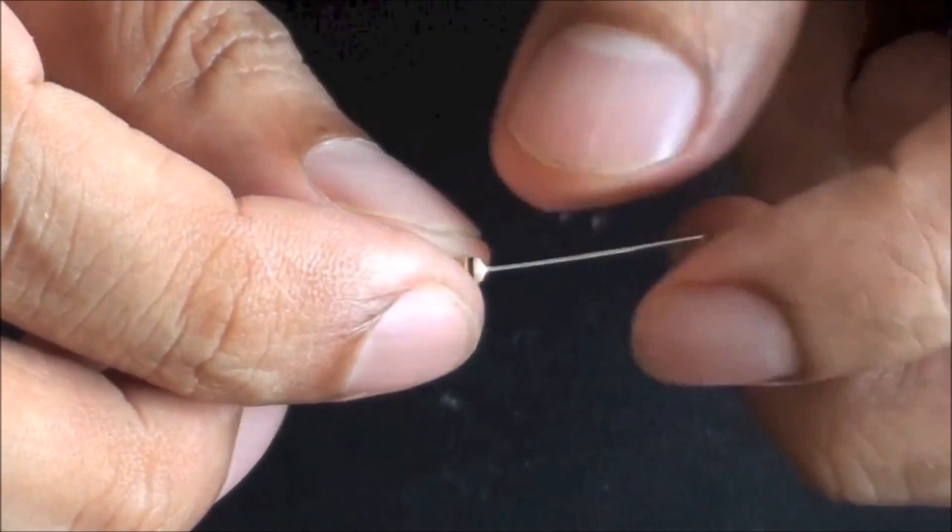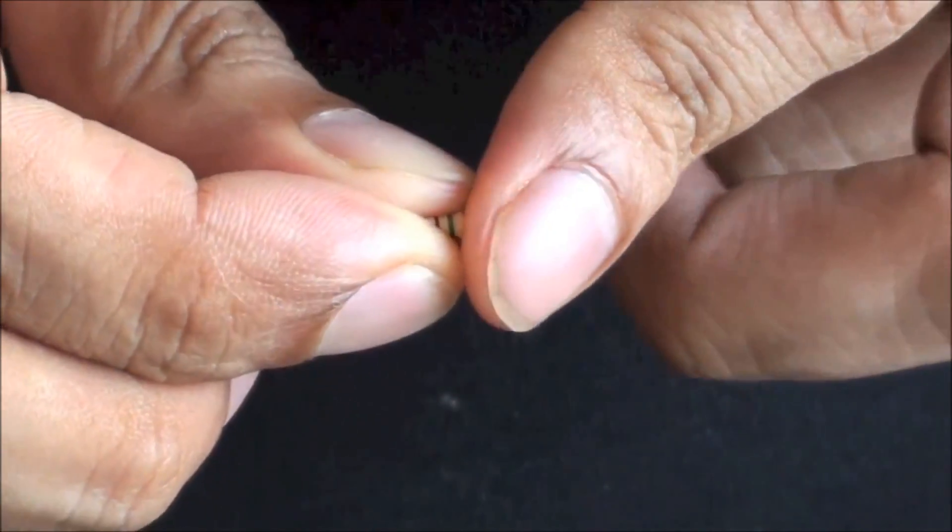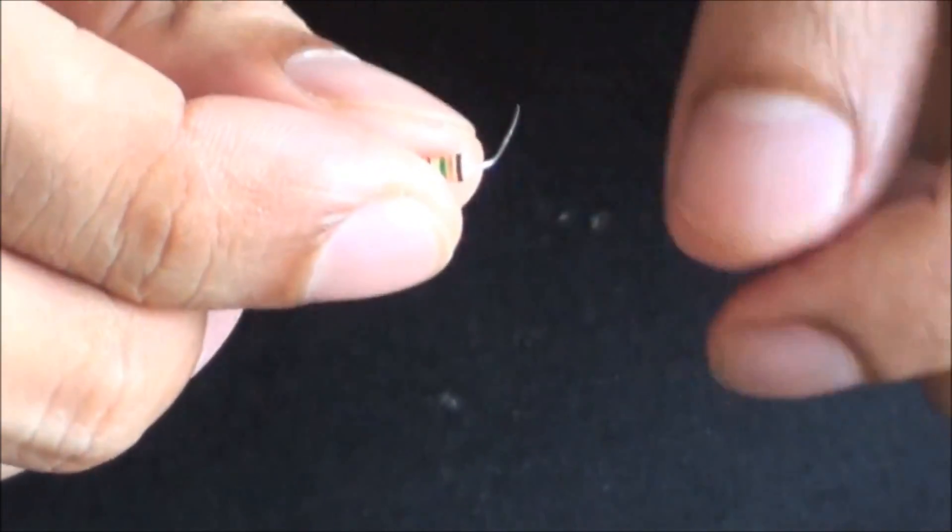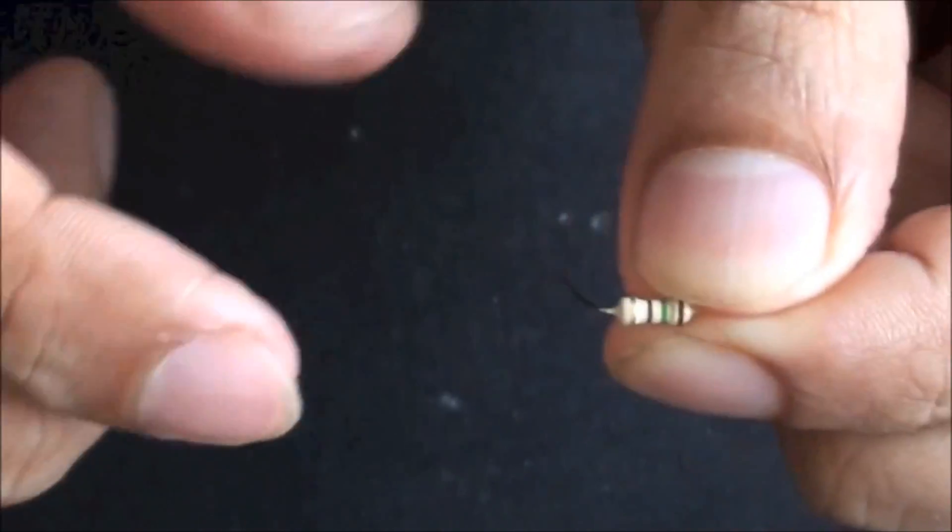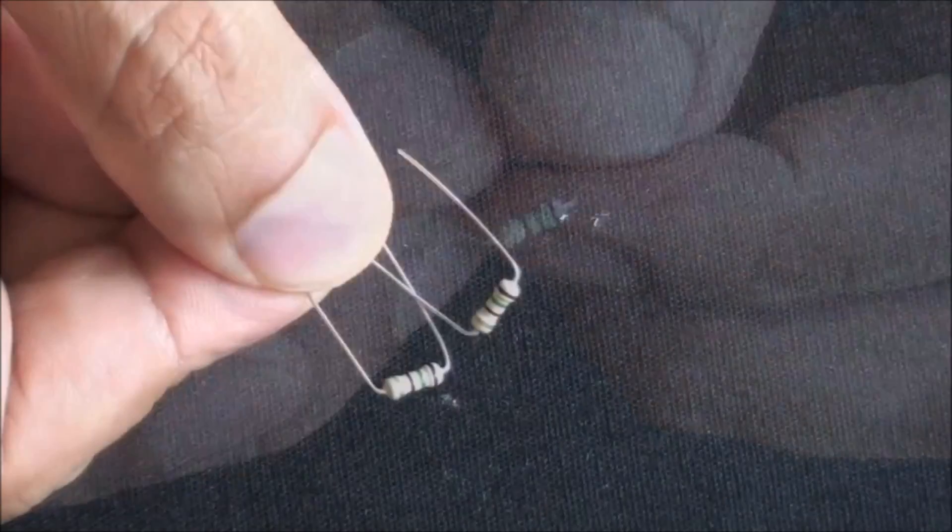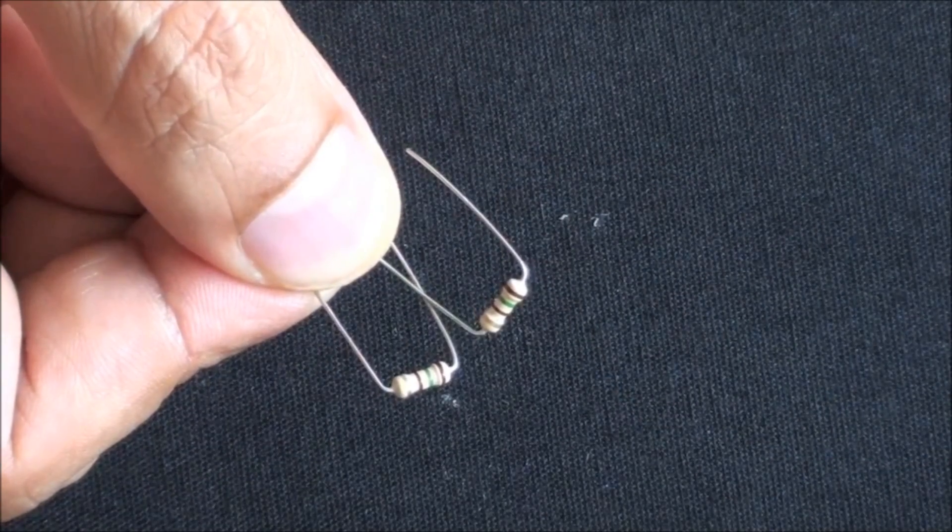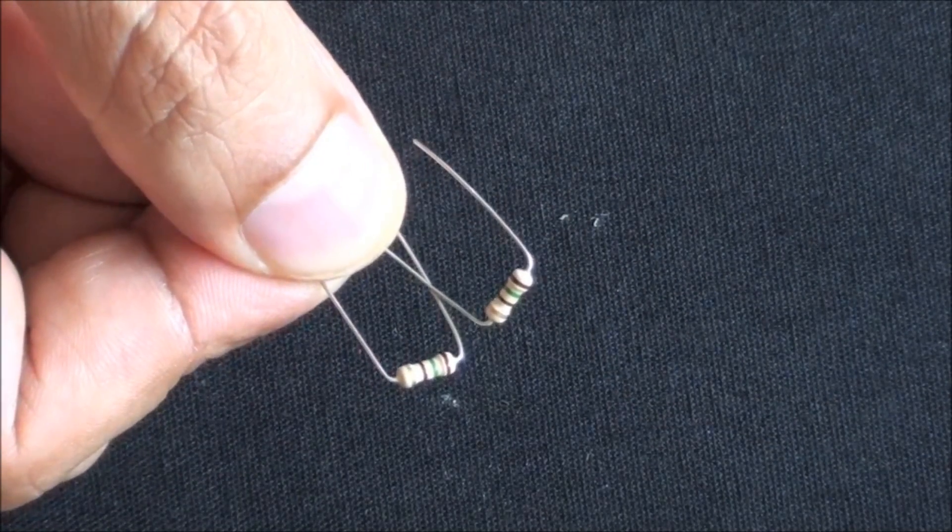To place the resistor in the PCB, we are going to take the legs of the resistor and bend them about 90 degrees, as you can see. Do this for both resistors.